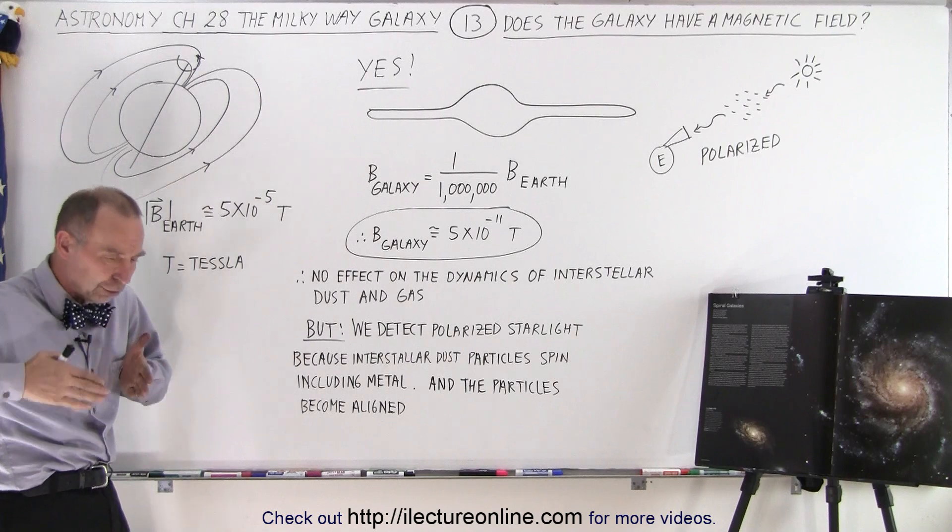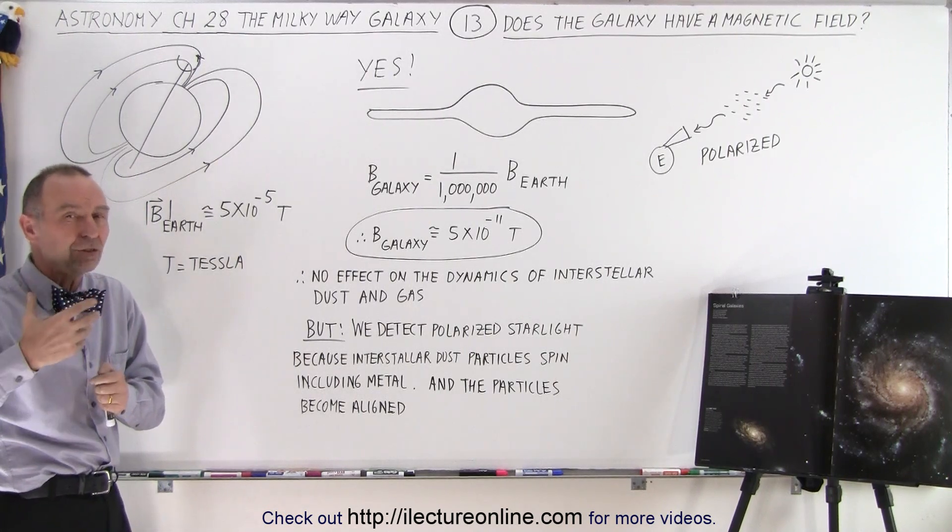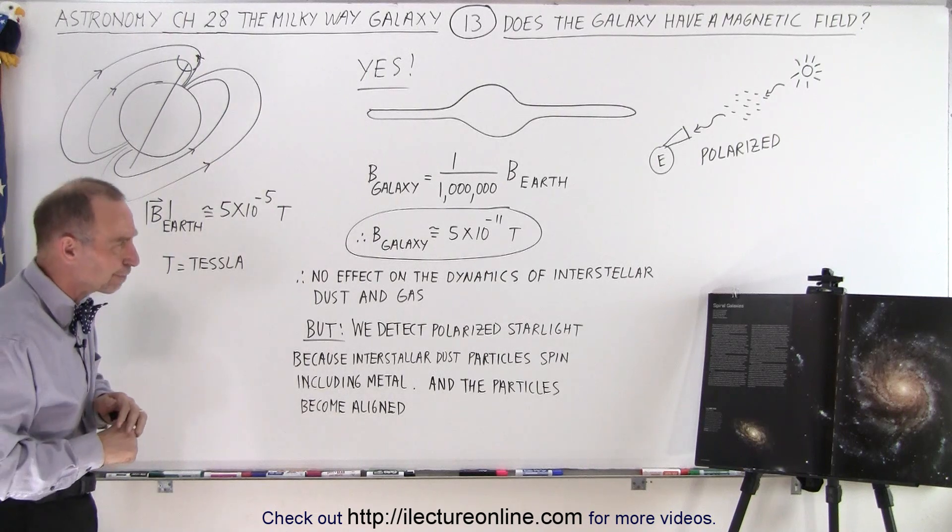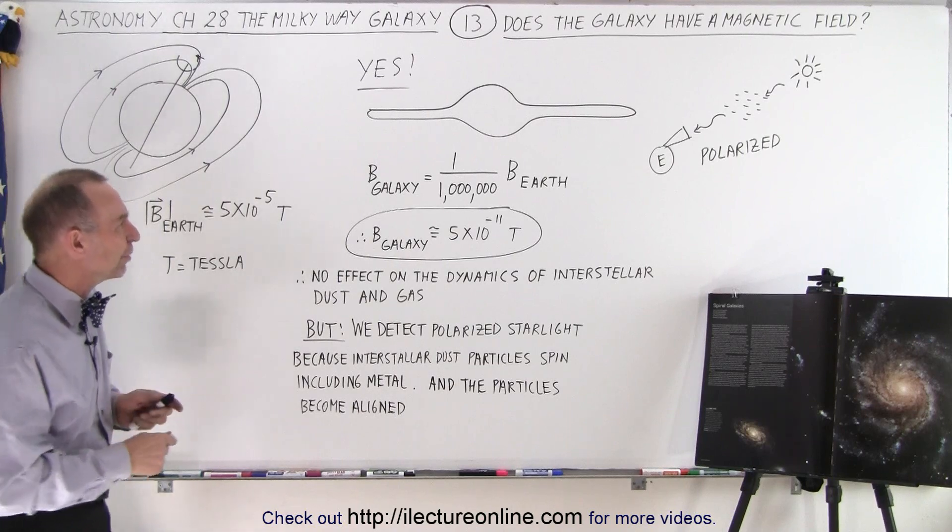In other words, it's strong enough to divert the solar wind particles that come towards us at hundreds, if not thousands of miles per second. But the magnetic field of the galaxy is not nearly as powerful.